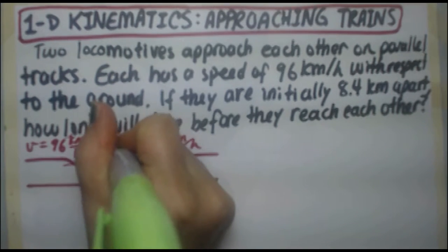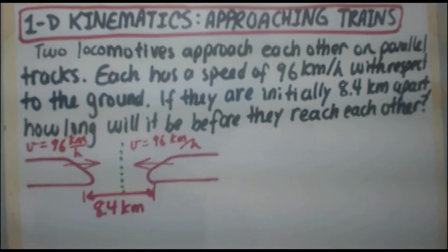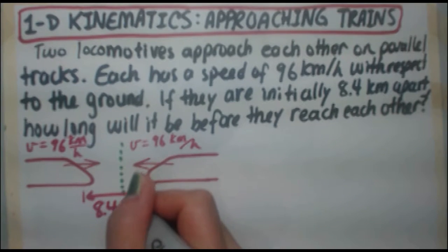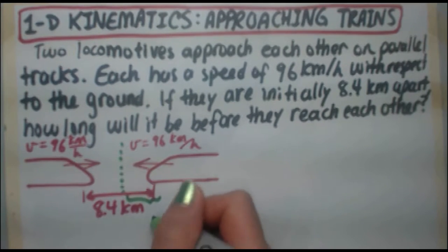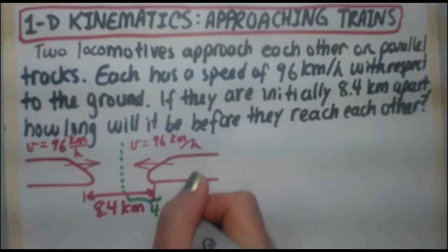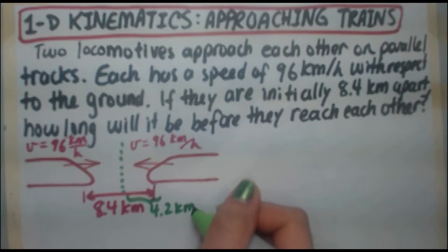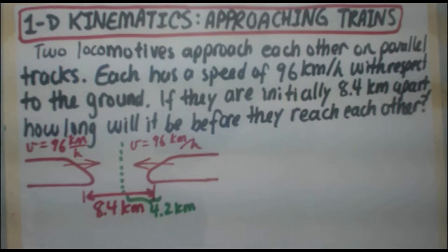They're going to meet right in the middle because they're both traveling the same speed. If you think about it, if they're both going to meet in the middle, that means that they're going to meet when each one travels the distance of 4.2 kilometers. They only have to travel half the distance each in order to collide.